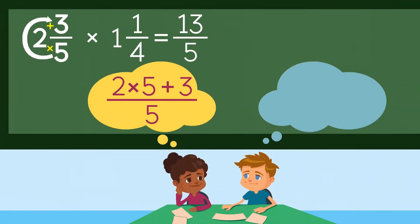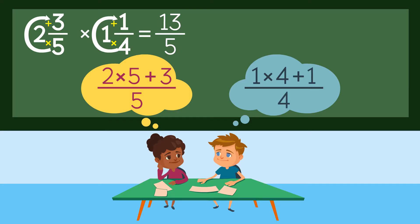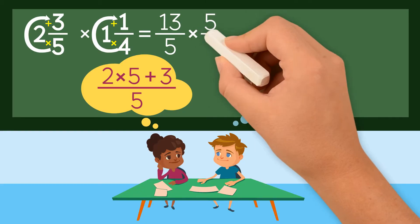Next, we take the second mixed number and use the C method to get an improper fraction. We multiply the denominator by the whole number and then add it to the numerator. So the numerator is 1 times 4 plus 1. The denominator stays the same. So the improper fraction is 5 over 4.